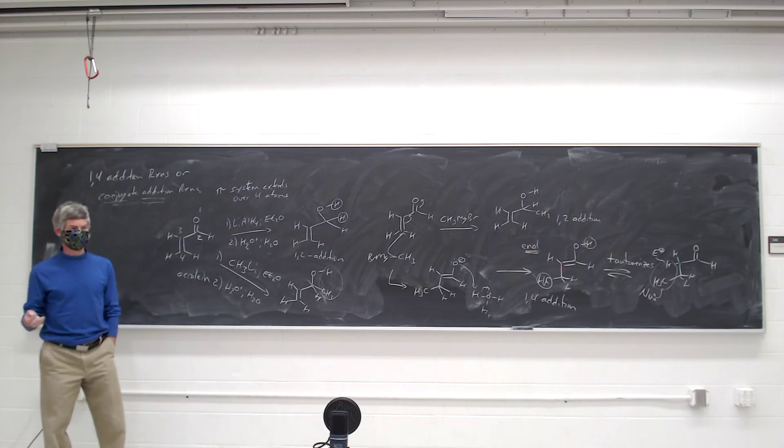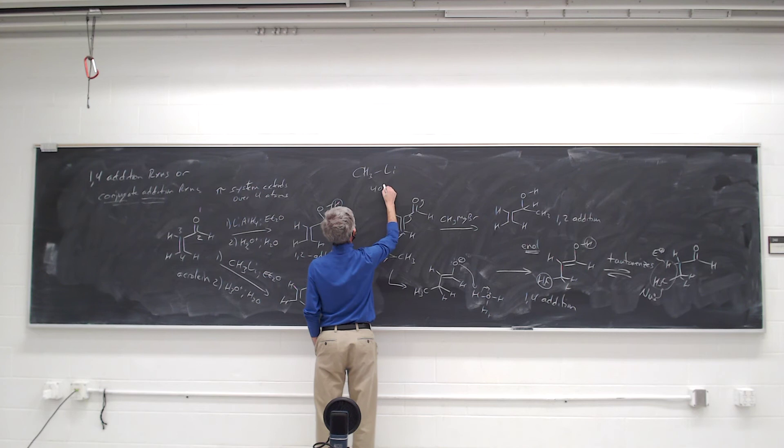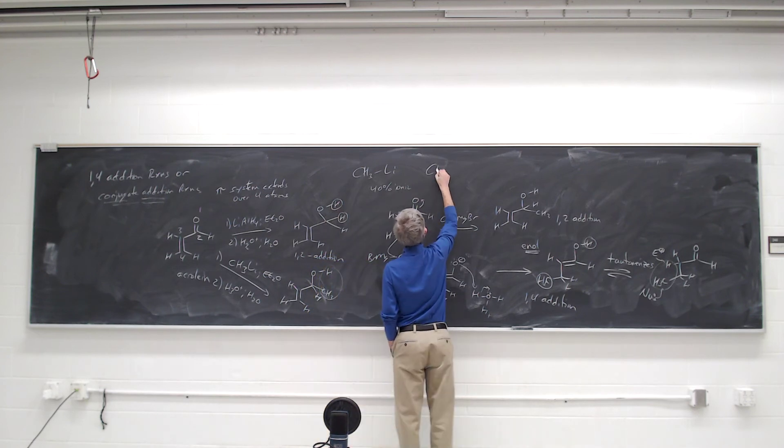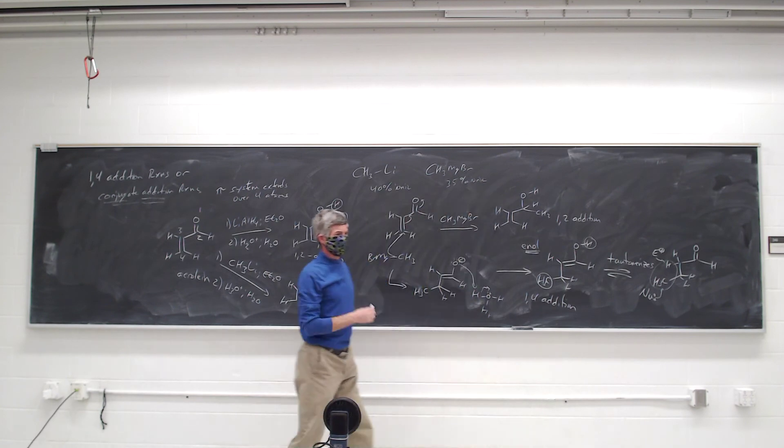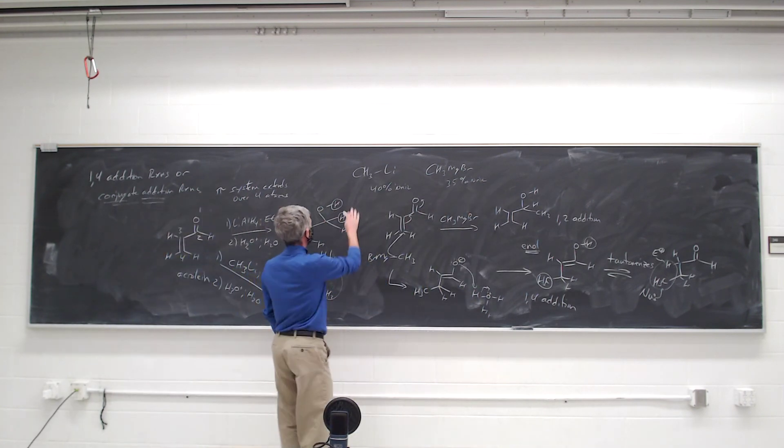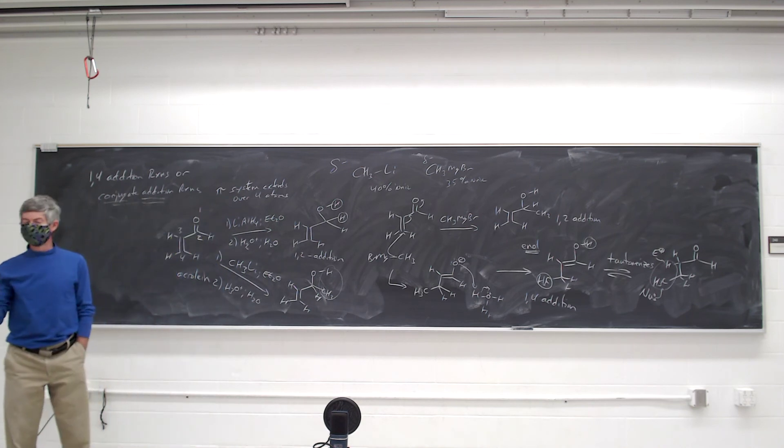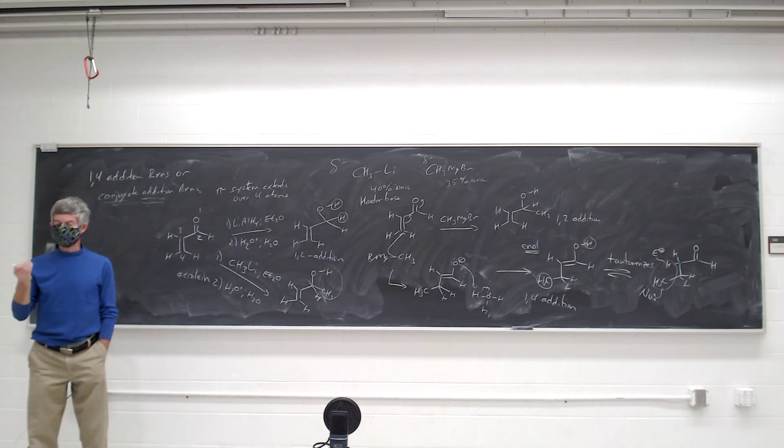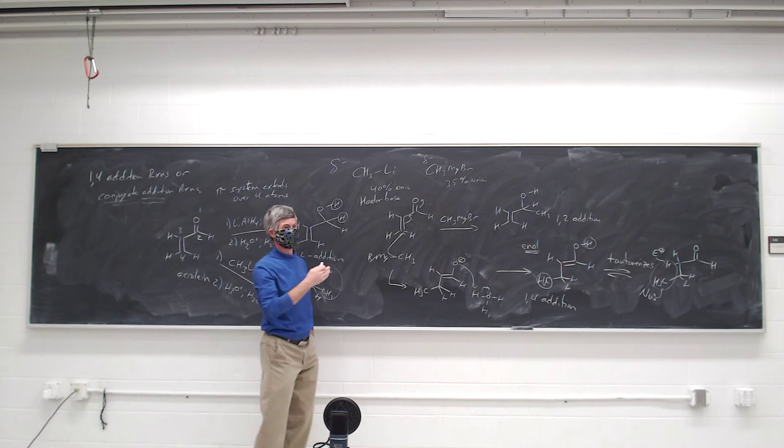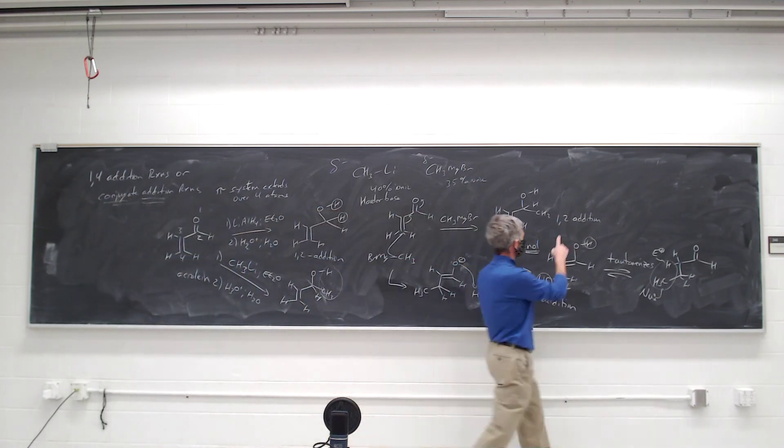And it's the hardness or softness of the base. The alkyl lithium is about 40% ionic, whereas the alkyl magnesium bromide is about 35% ionic. And that means there's less negative charge on the carbon. And this carbon is more negative than this carbon because there's more separation of the electrons. That makes this a harder base. This negative charge is localized on carbon. Carbon is a small atom. And it's a relatively large amount of negative charge. It's significantly ionic. It turns out that 1,2 addition is favored by hard bases.